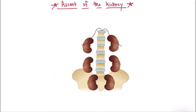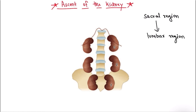Moving on to the next topic: the ascent of the kidney. During development, the kidneys are initially present in the sacral region. The metanephros first receives blood supply from the lateral sacral arteries, but with ascent it comes to be supplied by higher branches of the aorta.